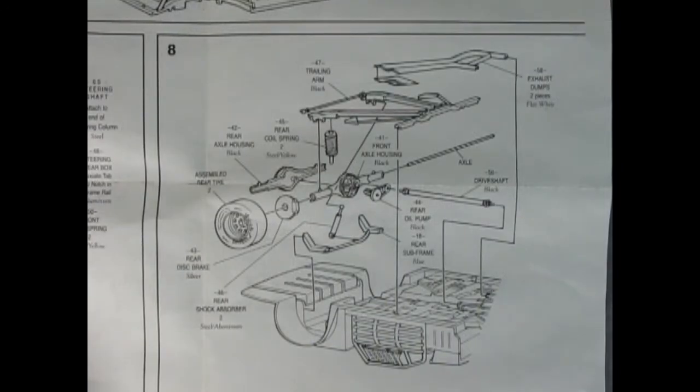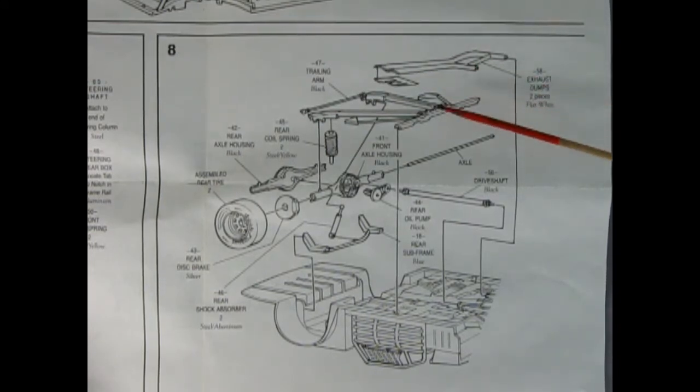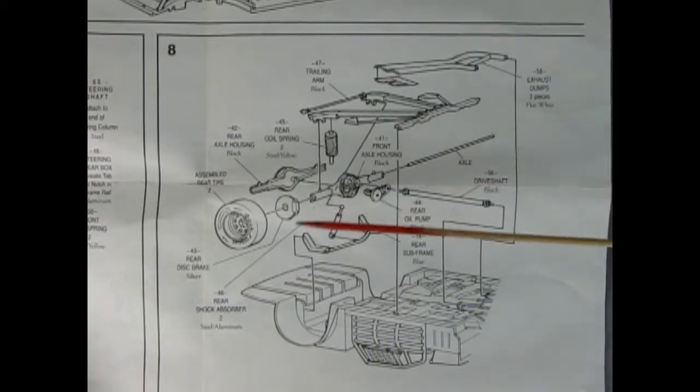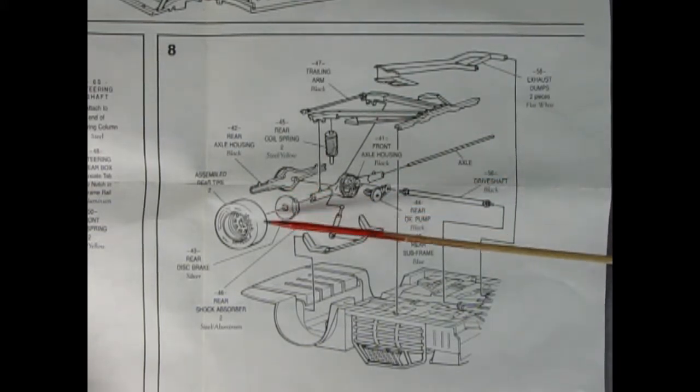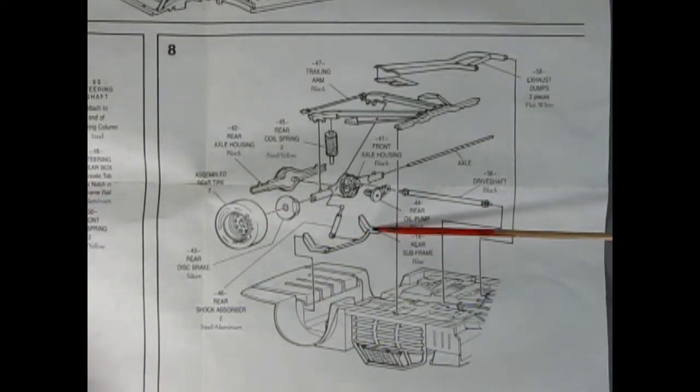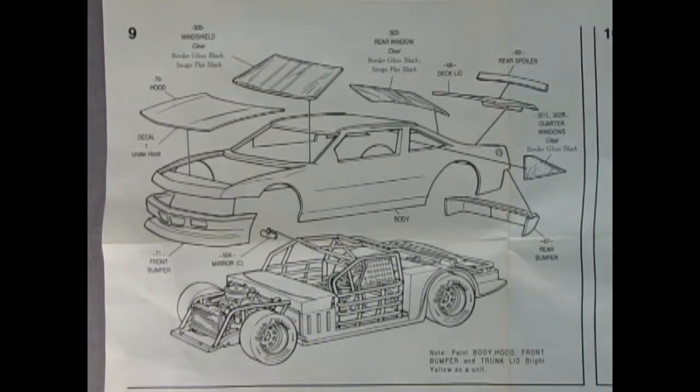Panel eight sure looks great. We've got our exhaust dumps here in two pieces, you paint those flat white. We've got our trailing arms, rear coil springs, rear axle housing in two pieces. There's a metal axle that will go right through. You've also got disc brakes on the back and your assembled tire. Down here we've got a little rear subframe, shock absorbers, the oil pump, and our drive shaft as well.